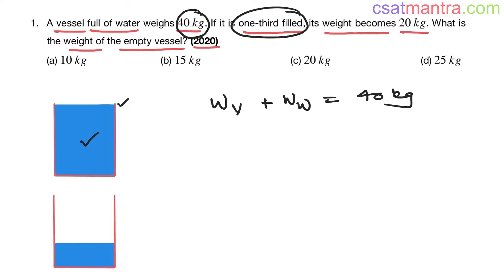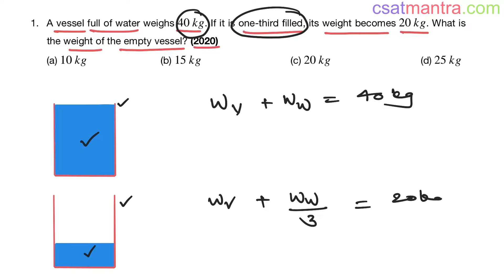Now if the vessel is one-third filled, the water becomes one-third. The vessel weight remains the same, plus the weight of water becomes one-third because the quantity of water has reduced to one-third. So the weight reduces to one-third as well. The total weight in this case is 20 kg. We now have two variables and two equations, so we can definitely solve them.